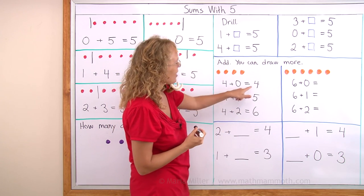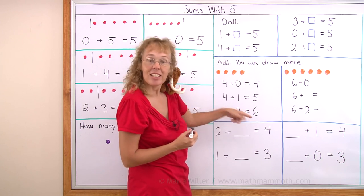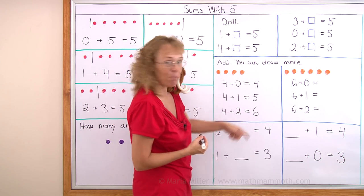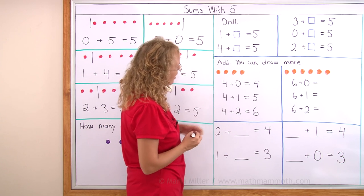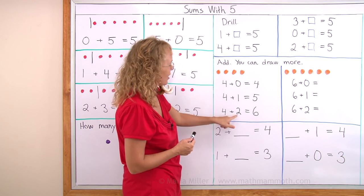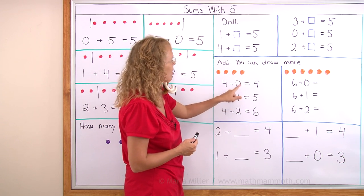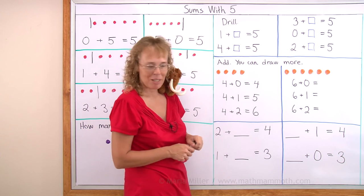Notice, look at these answers. Four, five, six. They go in order. There is a pattern here. Four, five, six. Just like here is a pattern zero, one and two. First we added zero, then one, then two to the same number.